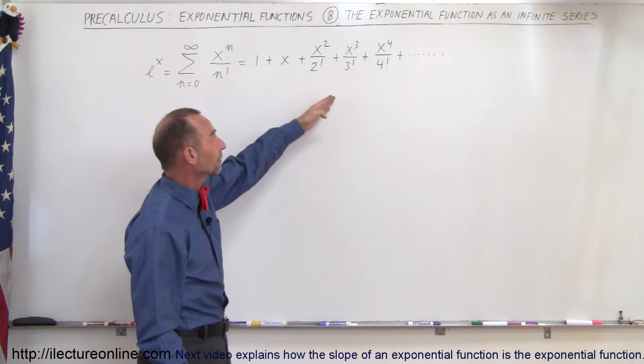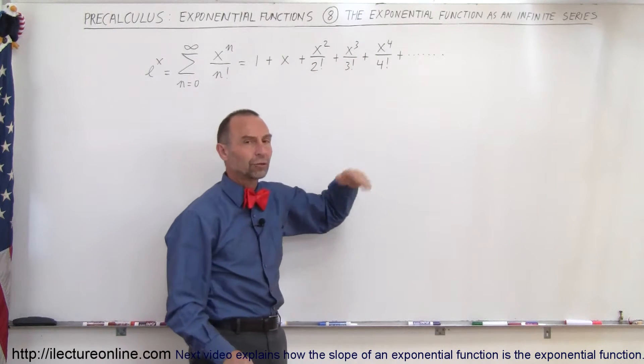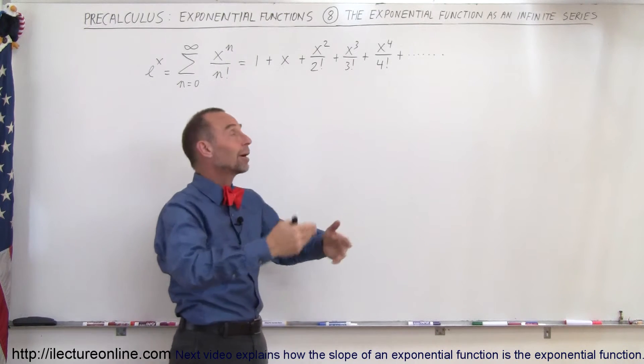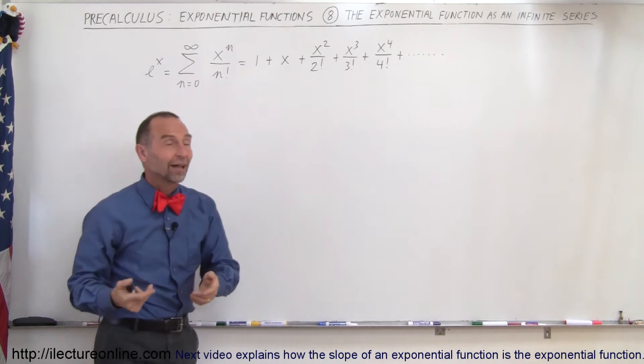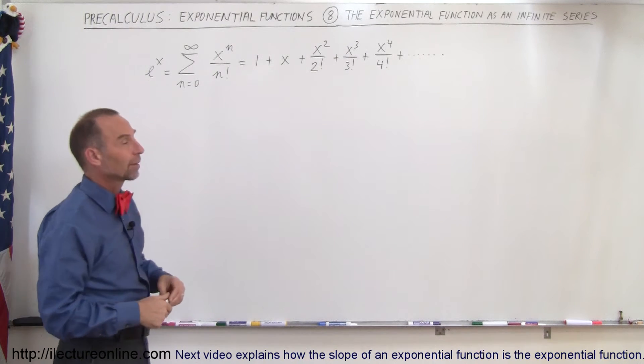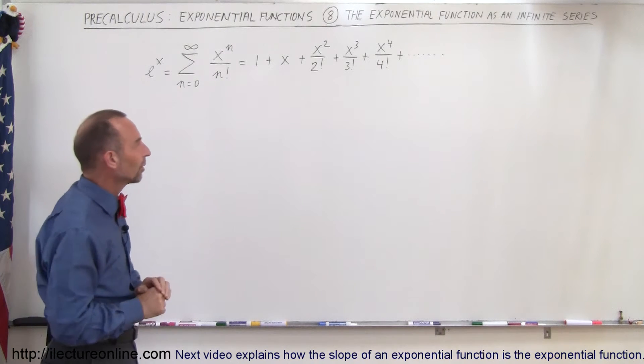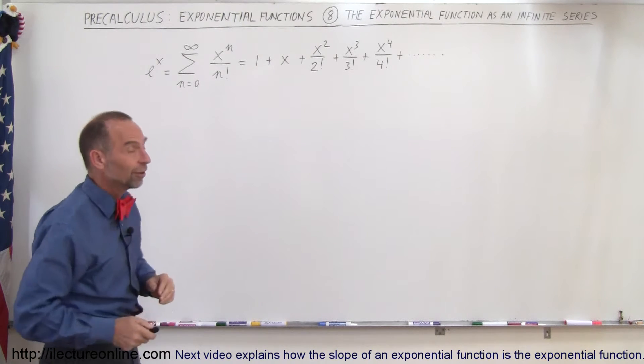Then we get x cubed over 3 factorial plus x to the 4th over 4 factorial, all the way out to x to the n power divided by n factorial. Of course, we don't need to go all the way to infinity factorial, which would be undefined. We don't need to go that far in our infinite series.